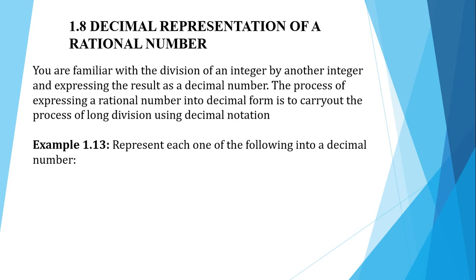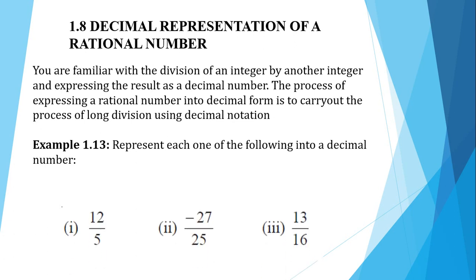The process of expressing a rational number into decimal form is to carry out the process of long division using decimal notation. We will represent the following rational numbers as decimals: 12 by 5, minus 27 by 25, and 13 by 16.